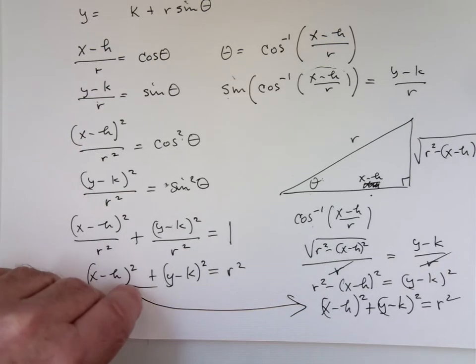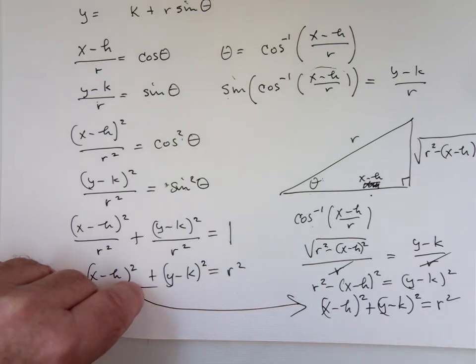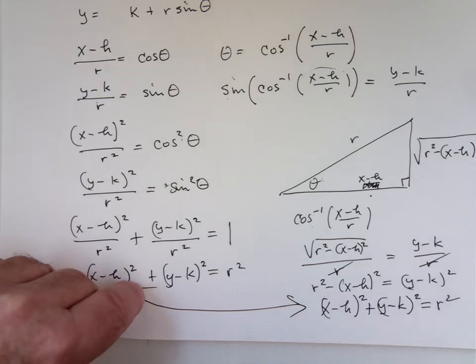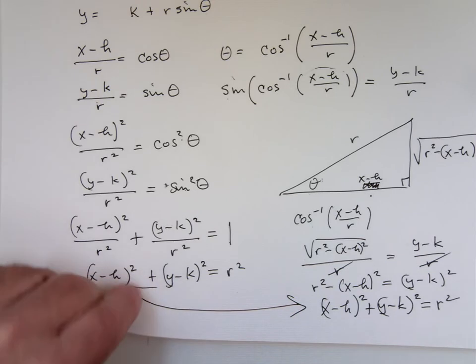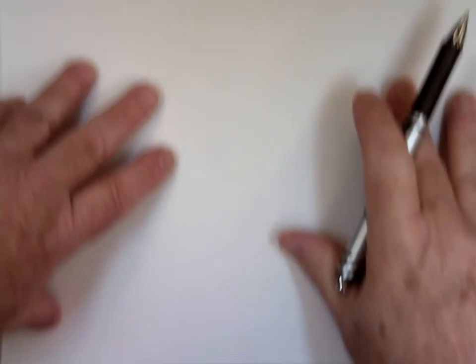We did the first derivative of a parametrically defined function dy/dx, we did the second derivative which gave us concave up or concave down. There's one more thing we have to do with these, and that's to find their arc length. So let's take a look at arc length.